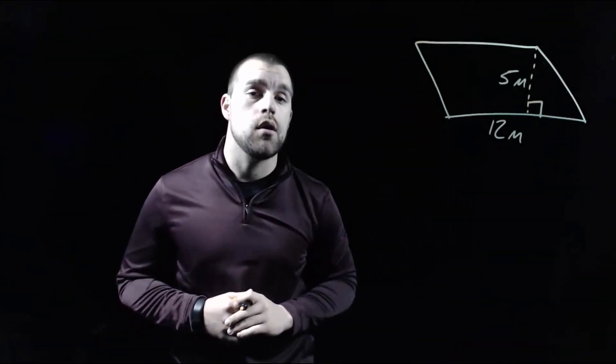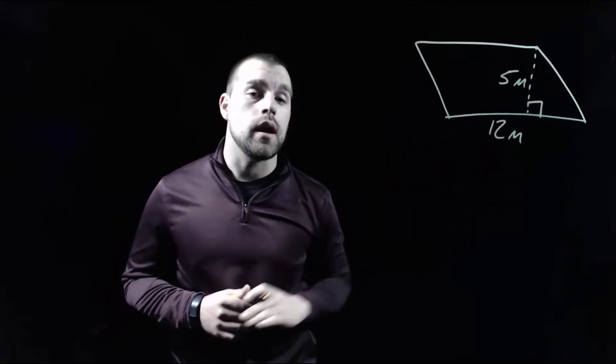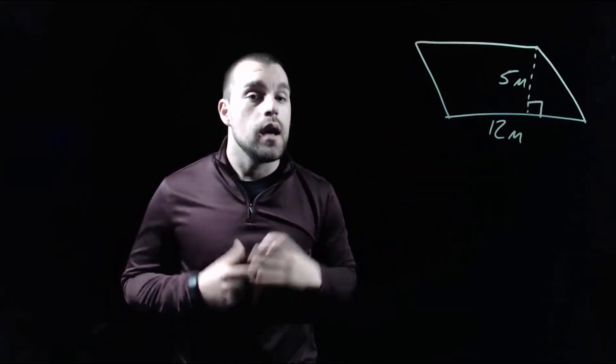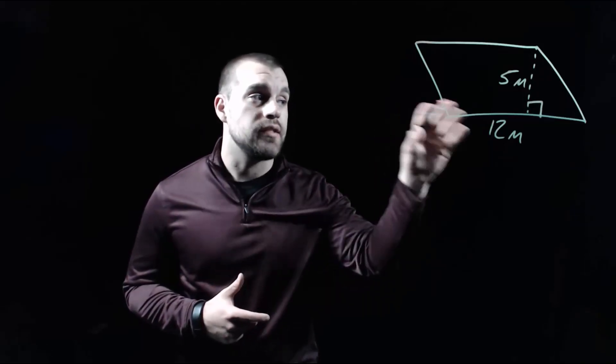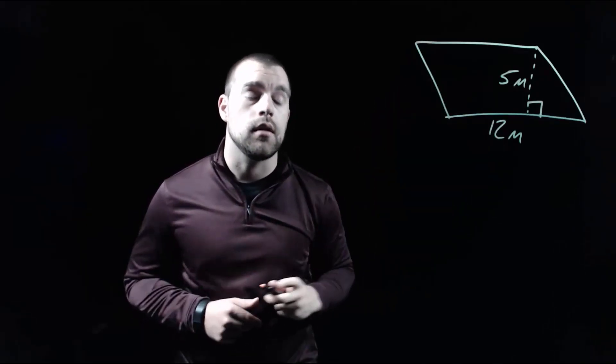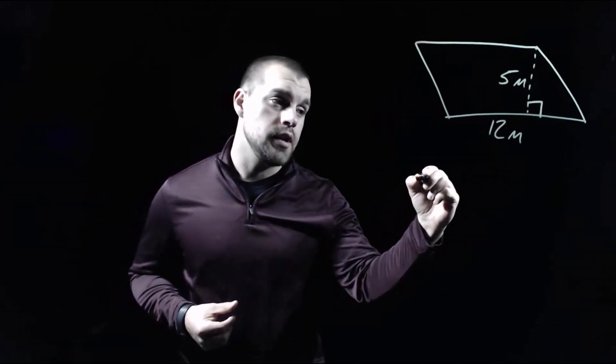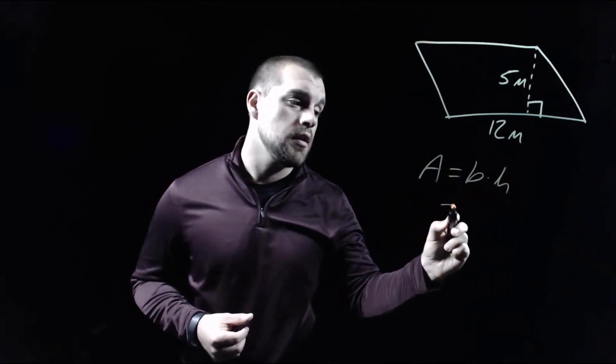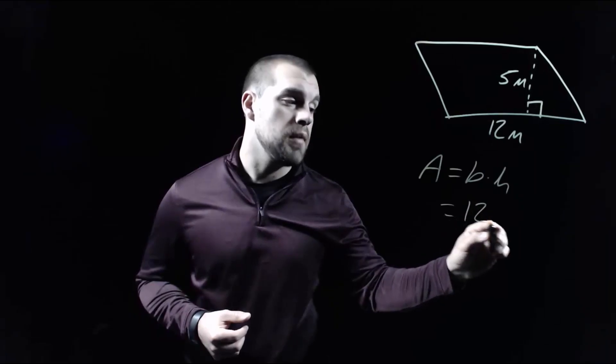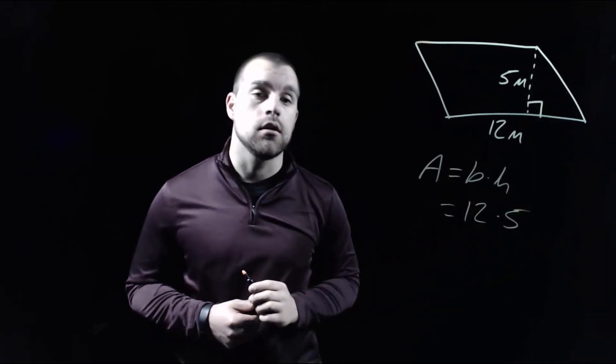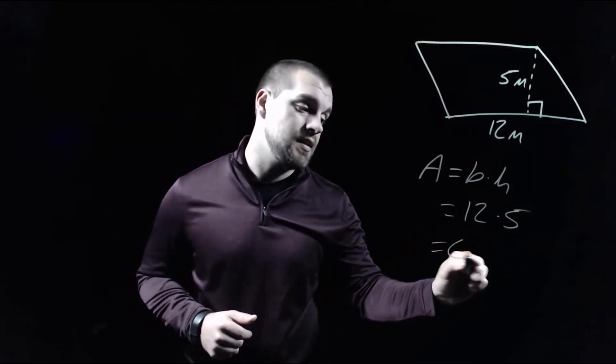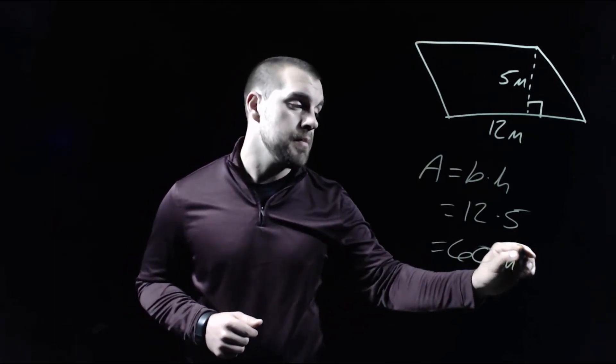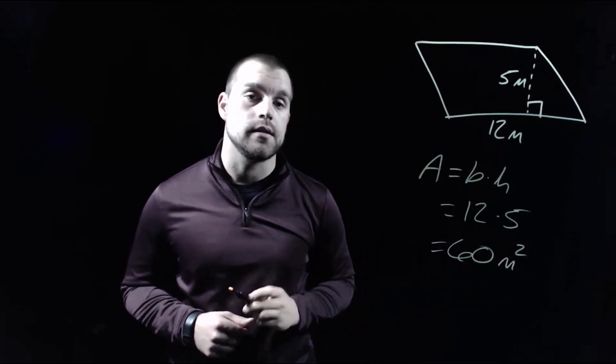So in this picture, we've got ourselves a parallelogram, we've got a 12 meter length going across the bottom, and on the inside we've got this 5 meter length, and those two pieces are perpendicular, so that's going to be the base and the height of our parallelogram. So as far as our formula goes, in order to find the area of a parallelogram, we have to take the base times the height. So in this case, we're going to take that 12 meter length times our 5 meter length. Now 12 times 5 is 60, and we'll have to label this answer. Since it's an area, it'll be meters squared as our answer.